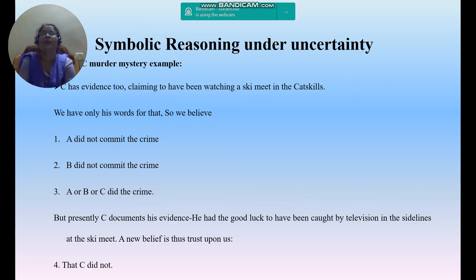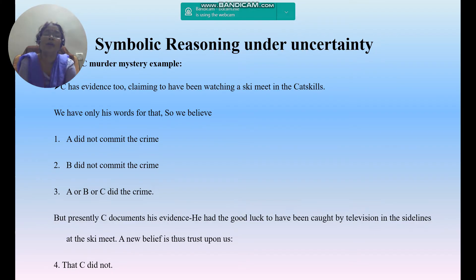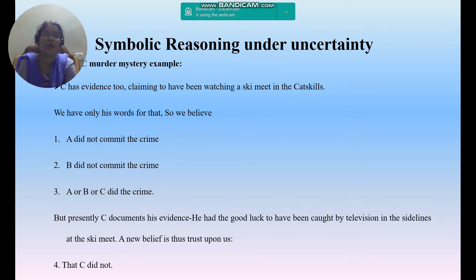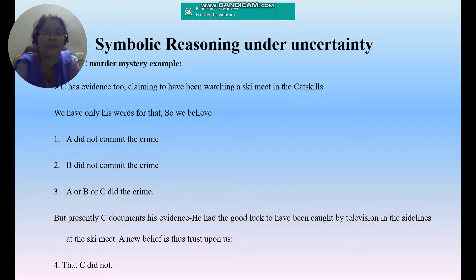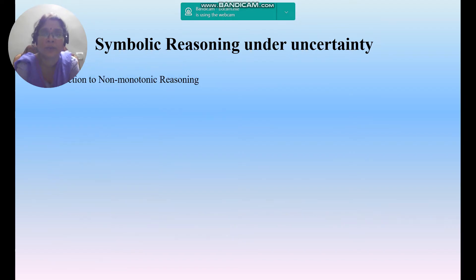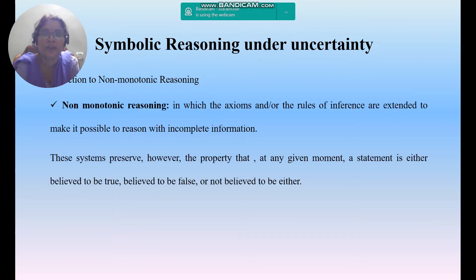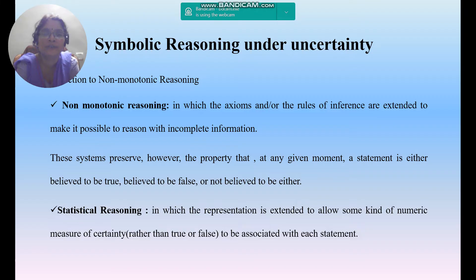Based on all three people's words, A didn't participate in the crime, B did not commit the crime, and all three people didn't commit that particular crime. C is showing strong documents along with his evidence, so he has good reason to believe he didn't commit any crime since he was not present at that particular time.